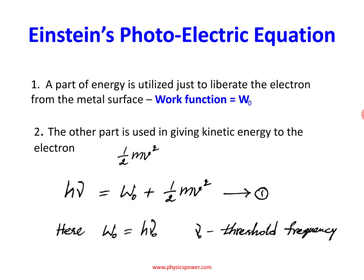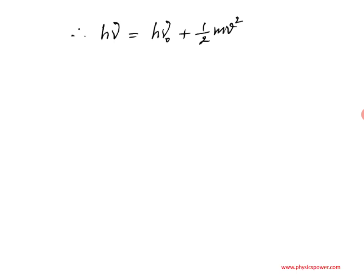The incident minimum frequency ν₀ is substituted into the equation. Further, W equals hν₀. Substituting this value into the equation gives: hν = hν₀ + ½mv². This is Einstein's photoelectric equation, where h is Planck's constant, ν is the frequency of incident radiation, and ½mv² is the kinetic energy of the electron.